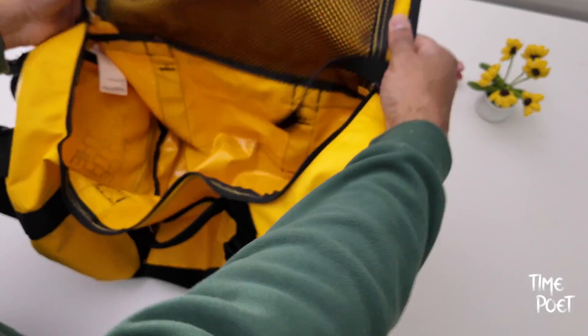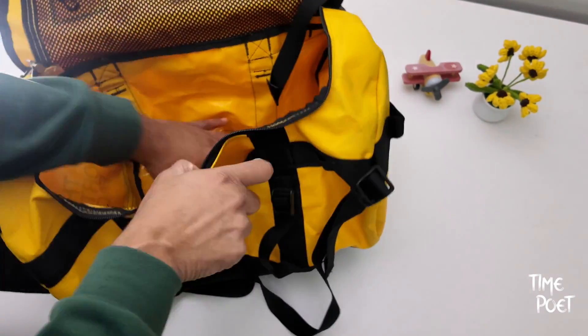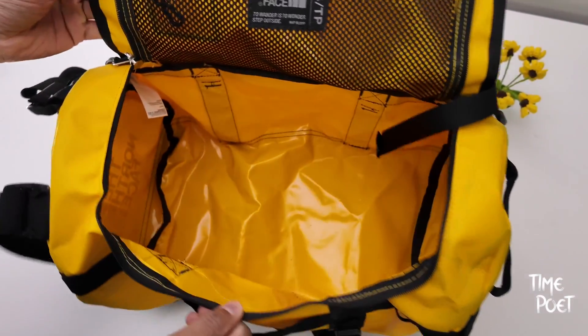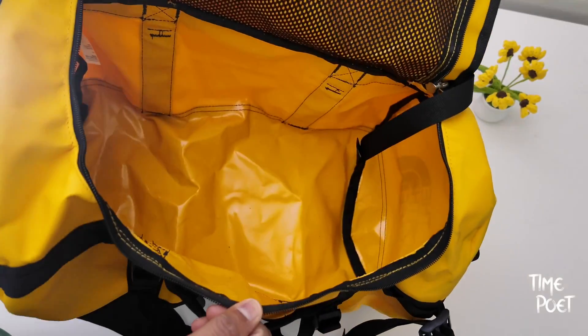This XS model of the bag weighs approximately 970 grams and has a volume of 31 liters. The dimensions are about 11 inches in width and height with an 18 inch length.